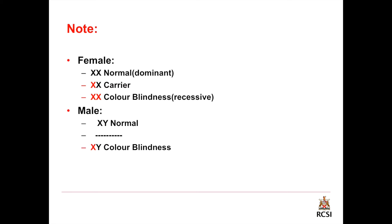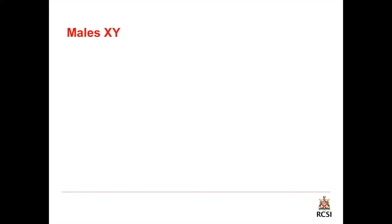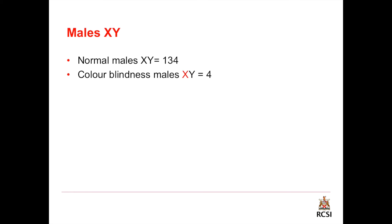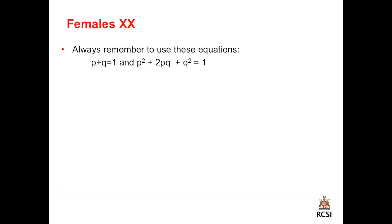Males do not need the Hardy-Weinberg genetic equations because males only have one X chromosome. Normal males equals 134 and color blindness in males equals 4, so we have only four recessive alleles in the males. In females, always remember to use the equations: p plus q equals 1 and the binomial equation. The recessive in this equation is females who have color blindness on both chromosomes; color blind females equals 3.